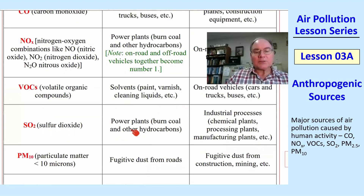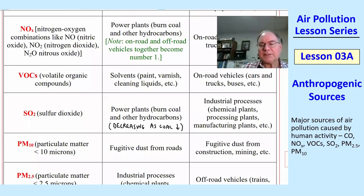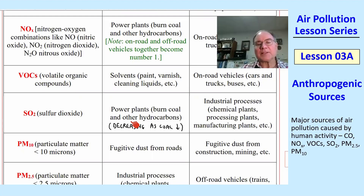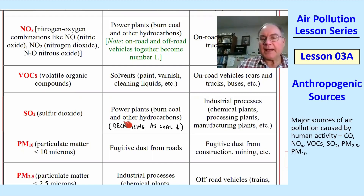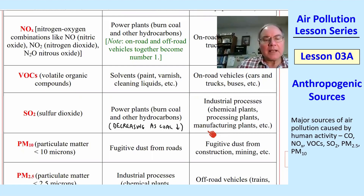Sulfur dioxide, SO2, comes mostly from power plants that burn coal, oil, and other hydrocarbons. The amount of SO2 in the atmosphere from coal and oil plants is decreasing as we add more and more renewables. The second source is industrial processes — chemical plants, processing plants, etc.